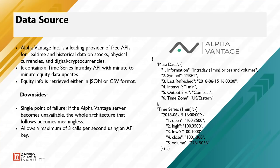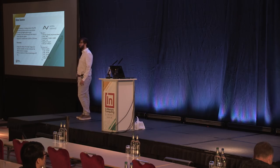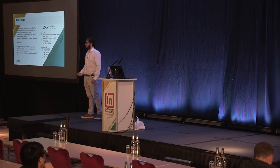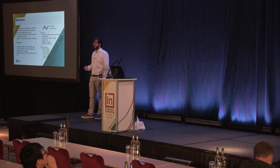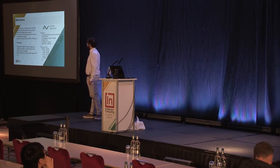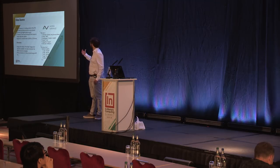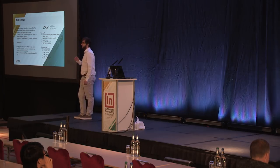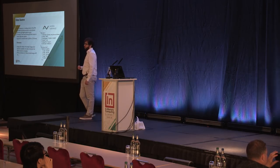First, we look at the data source for the architecture. Right now, the data source I'm using to collect the equities is called Alpha Vantage, which is a leading provider of data for stocks, currencies, and cryptocurrencies. This allows us to do API calls to the Alpha Vantage server and we collect the data in JSON format. We get data with minute-to-minute latency, which is very, very good, and it's also completely free.